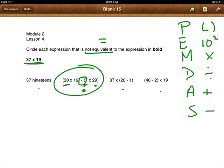And finally, the fourth one, 40 minus 2 is 38. 38 times 19 is not the same. It is not equal to. It is not equivalent to 37 times 19.